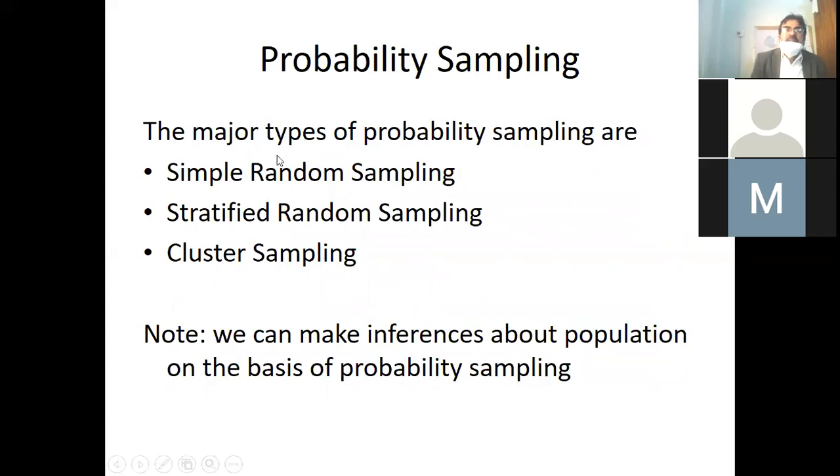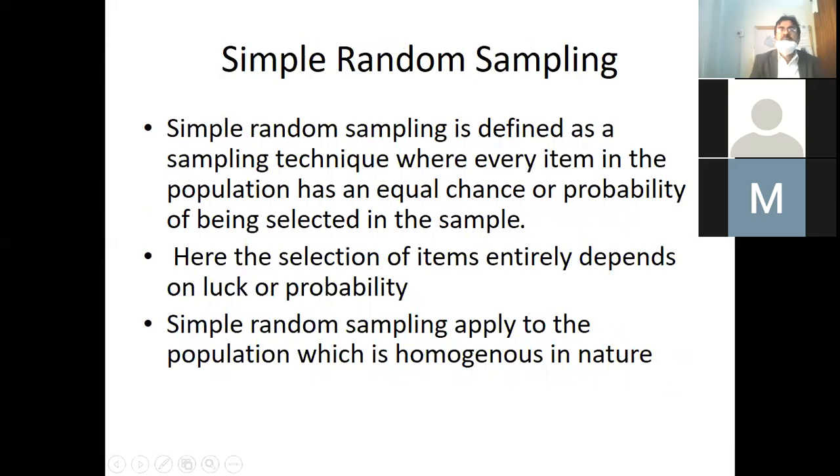The major types of probability sampling are simple random, stratified, and cluster. Note: we can make inferences about the population on the basis of probability sampling.